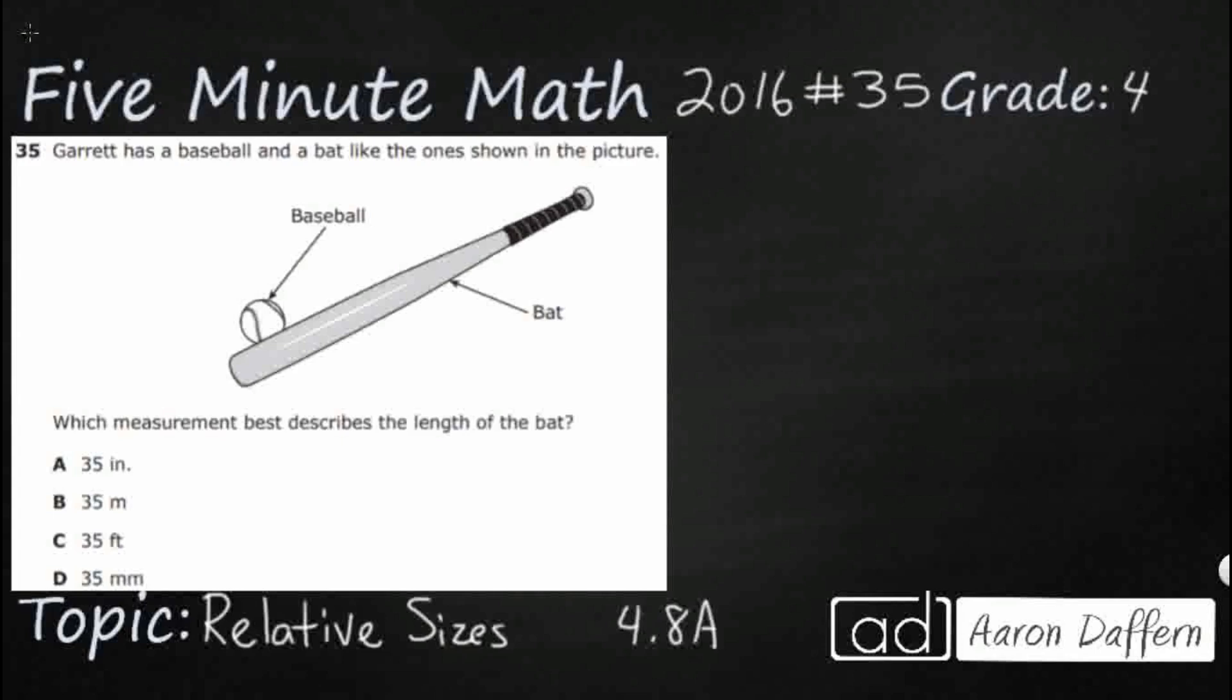So Garrett has a baseball and a bat like this one shown here and we need to find the measurement that describes the length of the bat. And so we've got a whole bunch of 35s. The only thing that's changing here are our units.